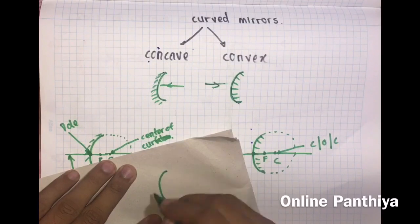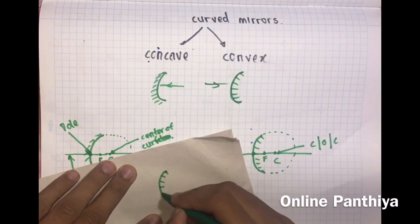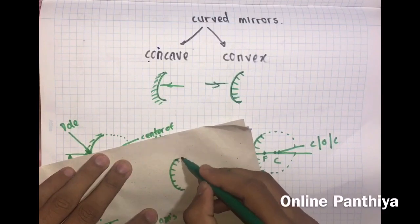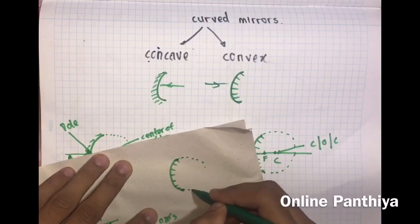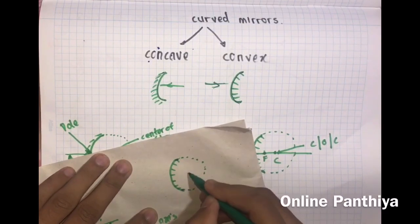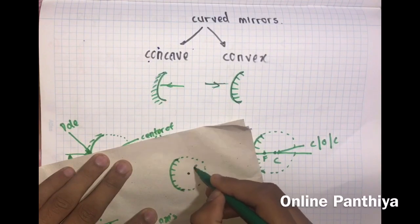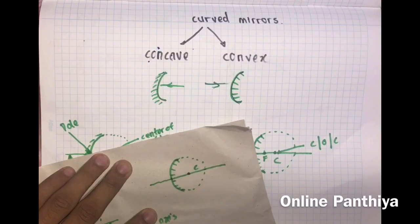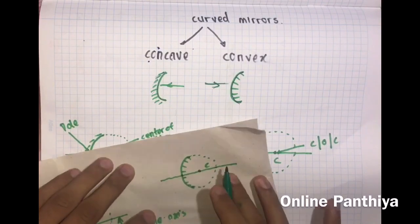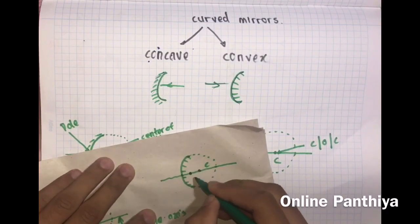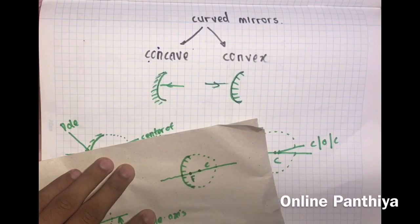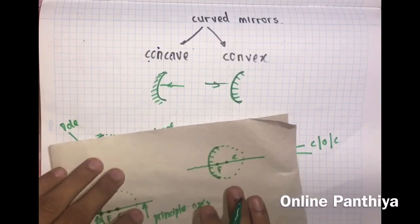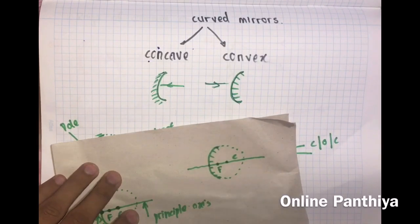For the convex mirror, this part is shaded. Since the curvature is towards this side, you draw the sphere towards the same side. The center of curvature C is the center of that circle. The principal axis is drawn through the pole, and the focal point F is the midpoint between the pole and C.